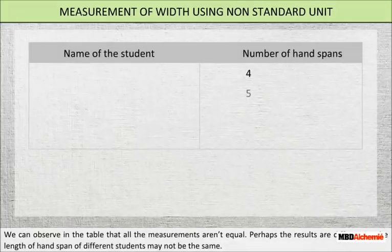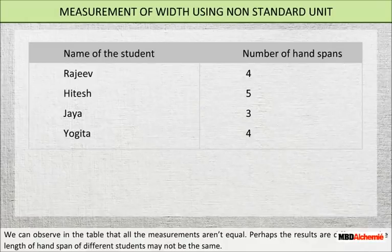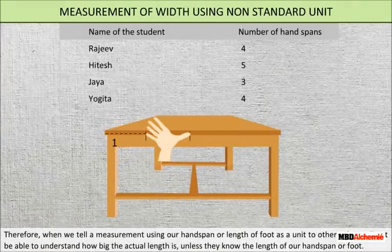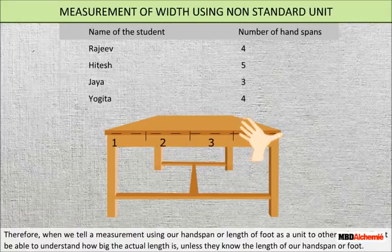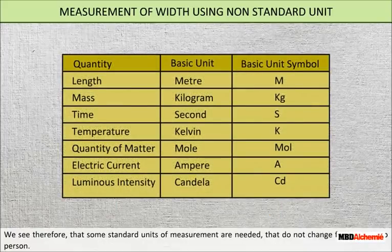We observe that all the measurements are not equal. The results are different because the hand span of different students may not be the same. Therefore, when we tell a measurement using our hand span or length of a foot as a unit to others, they will not be able to understand how big the actual length is unless they know the length of our hand span or foot.